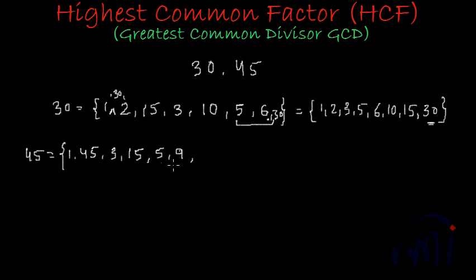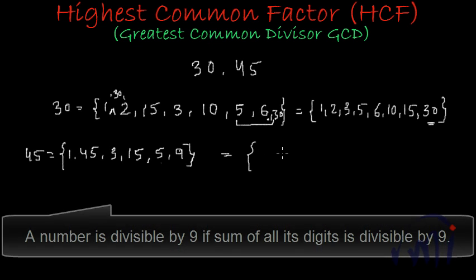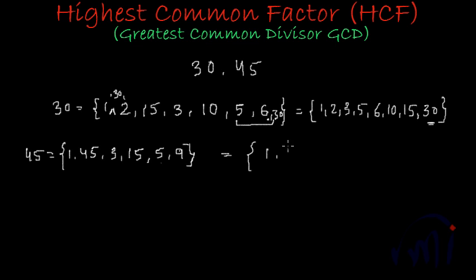Let's check divisibility by 7: 7 sixes are 42 and 7 sevens are 49, so 45 is not divisible by 7. It will not be divisible by 8 because it is an odd number. And yes, it will be divisible by 9 because 4 plus 5 is 9, and 5 nines are 45. Those two factors 5 and 9 I have already written down. So in increasing order the factors of 45 are: 1, 3, 5, 9, 15, and 45.